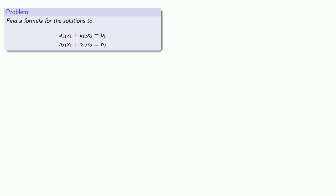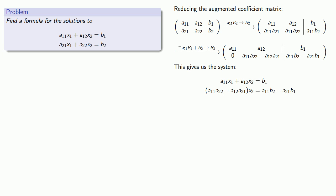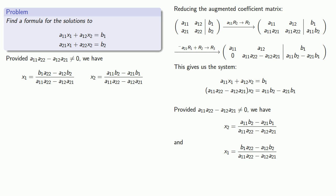So let's see if we can find a formula for the solutions to a system of equations. And we can do this by reducing the augmented coefficient matrix. Our row echelon form will give us the system of equations. And provided this coefficient of x2 is not equal to 0, we can divide by it and get our solution for x2. And then use back substitution to find x1. And this gives us a set of formulas for x1 and x2 in terms of the coefficients and constant of the original equations.